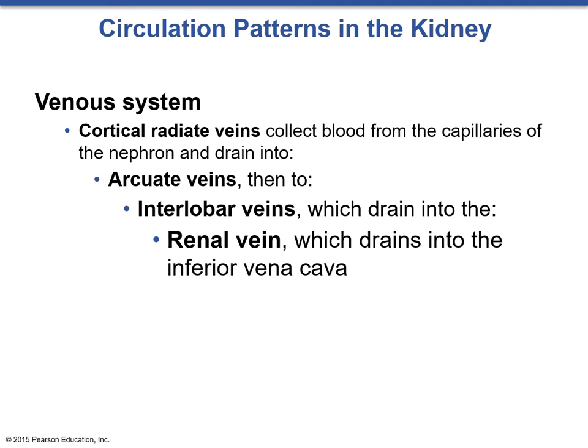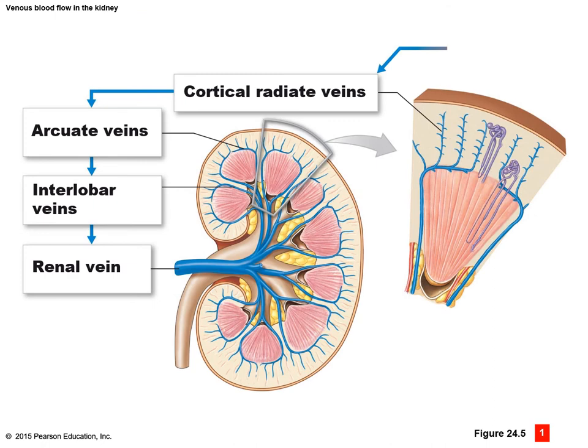From either the vasa recta or the peritubular capillaries, depending on the nephron type, blood drains to the corticoradiate vein. From there the venous system simply works backwards, with the major difference being that there is no segmental vein — only a segmental artery on the arterial side. So the venous flow goes: corticoradiate vein → arcuate vein → interlobar vein → renal vein → inferior vena cava and back to the heart.